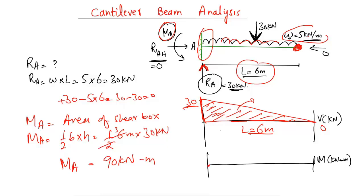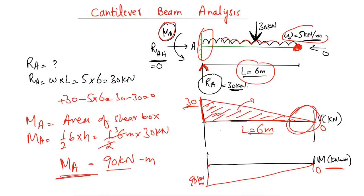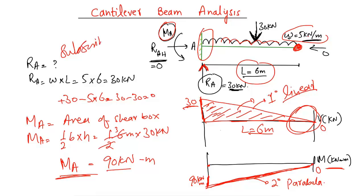So the moment acting at point A is −90 kilonewton-meters, and the bending moment at the free end is zero. The maximum bending moment is at point A, equal to 90 kilonewton-meters. Also note that since the shear force diagram is a linear (first-degree) line, the bending moment diagram will be a parabolic (second-degree) curve — the BMD is always one degree higher than the SFD. Hope you guys understood — don't forget to subscribe for more engineering videos!